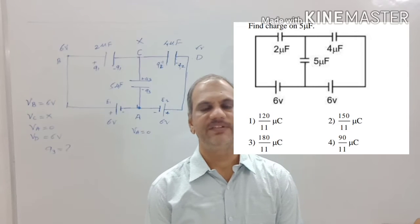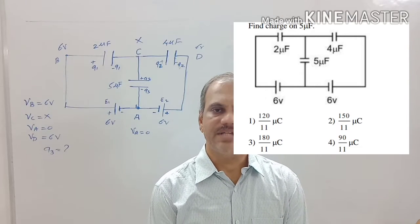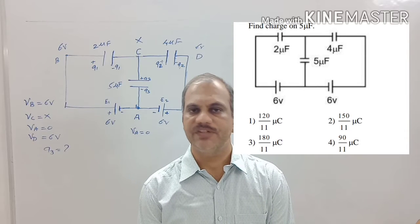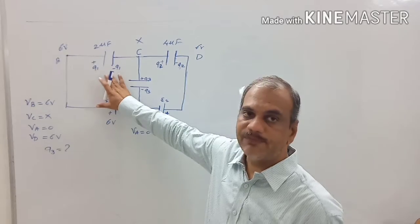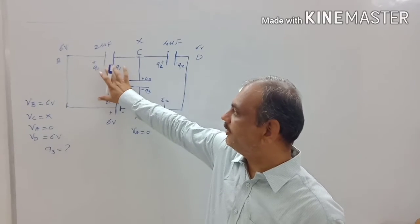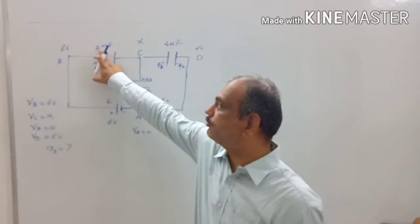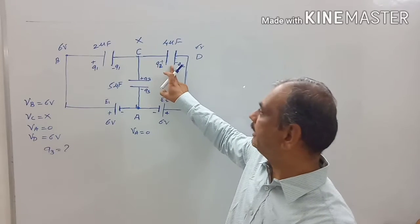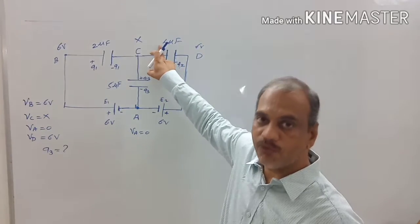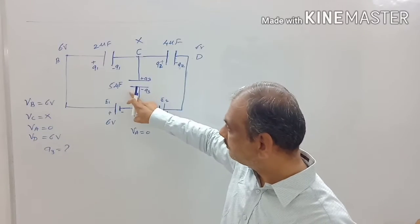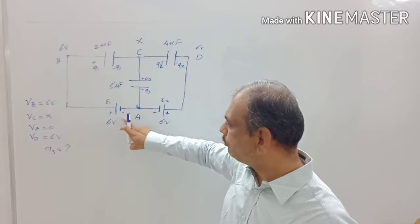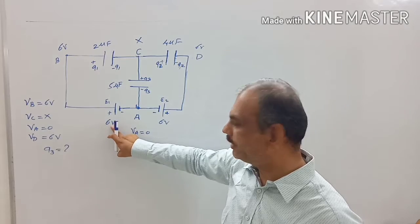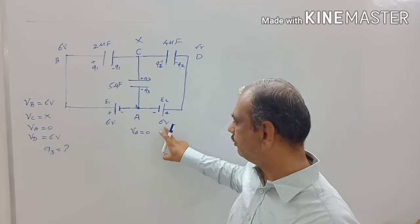Then, the next example is find the charge on the condenser given in the diagram. Here, there are three types of condensers given: the first condenser having a capacity of 2 microfarad, second condenser having a capacity of 4 microfarad, third condenser having a capacity of 5 microfarad, and two batteries are given having voltage 6 volt, 6 volt.